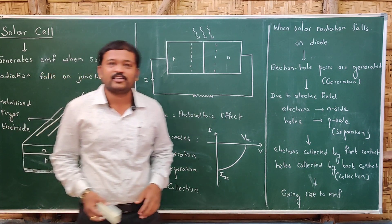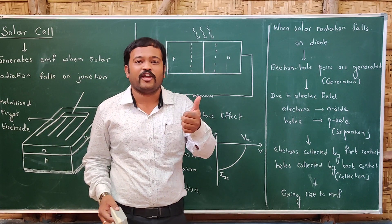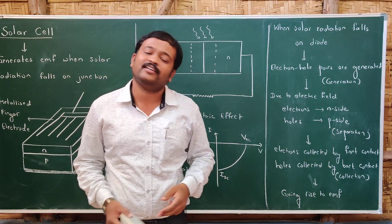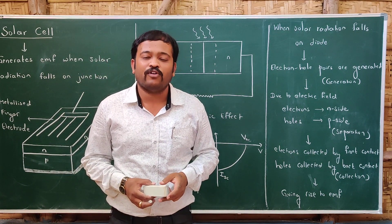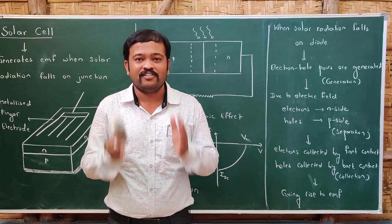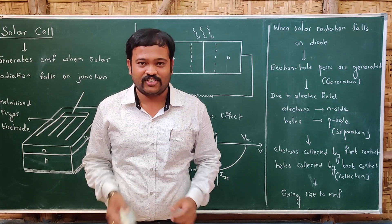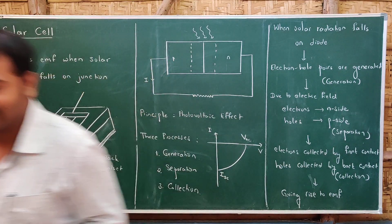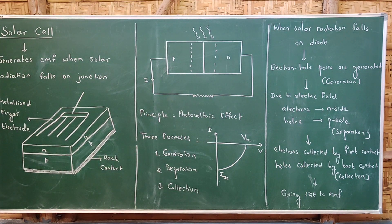Today we discussed photodiodes, LEDs, and solar cells — the three optoelectronic junction devices. Thank you.